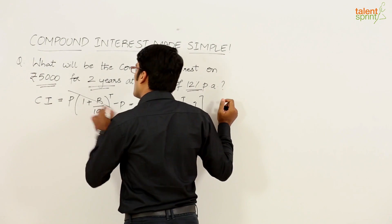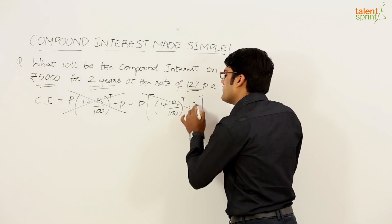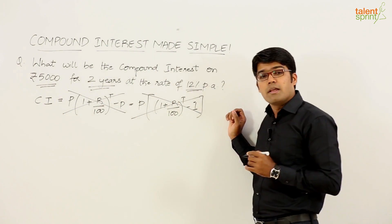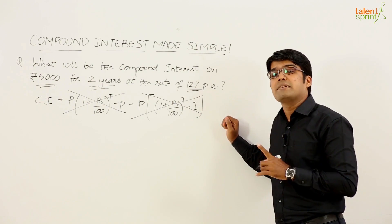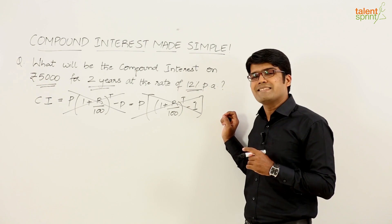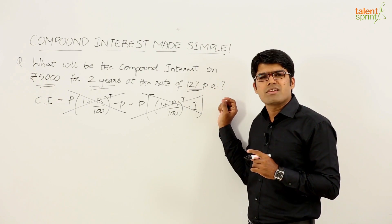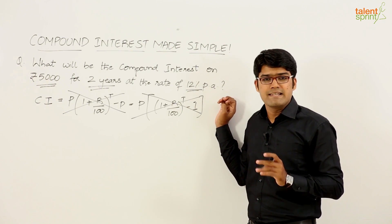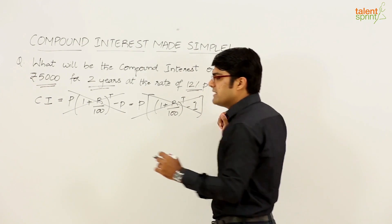But then a smart student would not do this. Let us just forget about the formula. What is important is not the formula but what happens behind the formula. Now if you know or if you go by the concept you will be able to solve this question in about 10 to 15 seconds at best.